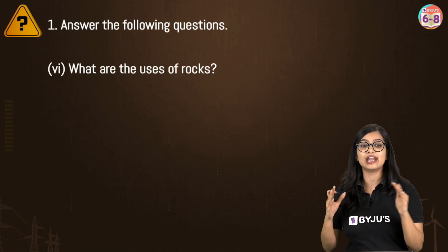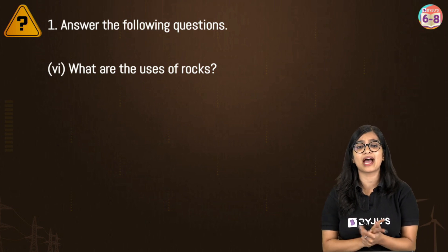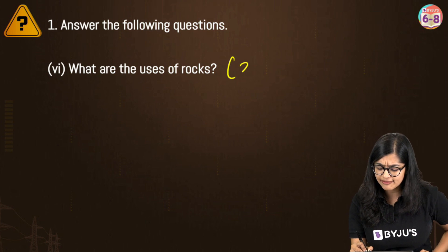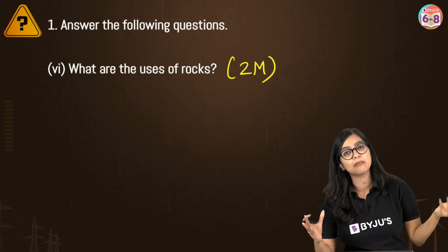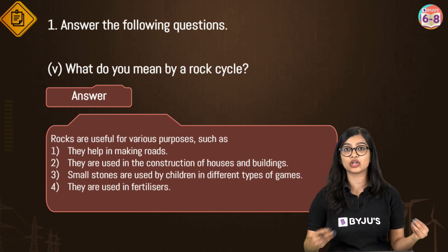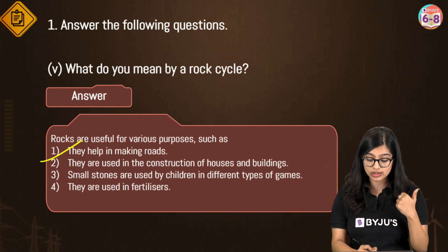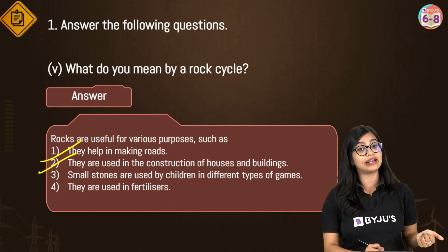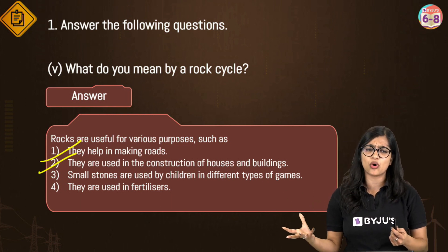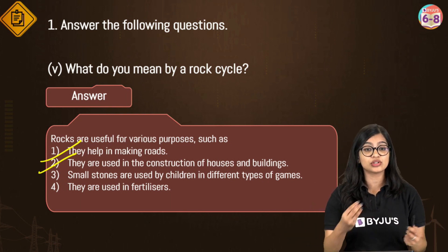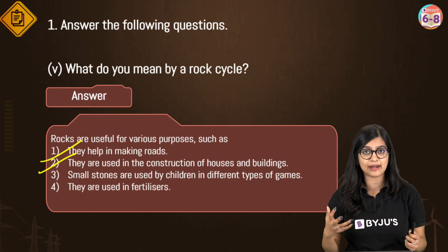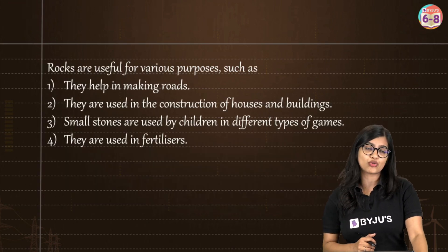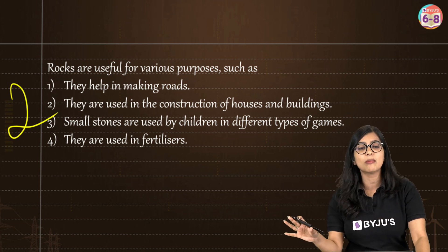The next question is: what are the uses of rocks? This is an easy two-mark question. Rocks are necessary for various reasons: roads are made with the help of rocks, they are used in construction of buildings, minerals are extracted from rocks, and children play with small stones. List these down and you will get two marks.